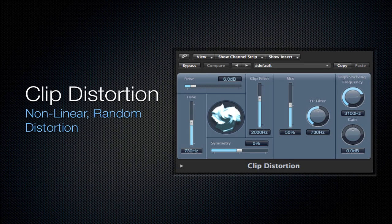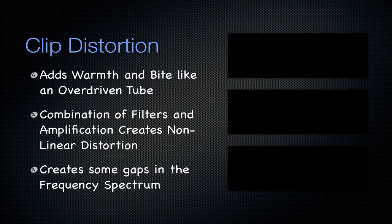Next is the clip distortion. It's a nonlinear random distortion — it adds warmth and bite like an overdriven tube. It's a combination of filters and amplification that creates this nonlinear distortion. The only problem with it is it creates some gaps in the frequency spectrum, so be careful for this exact reason. It does add randomness and an overdriven tube sound, but those gaps in the frequency spectrum might be something you want or don't want in your track.